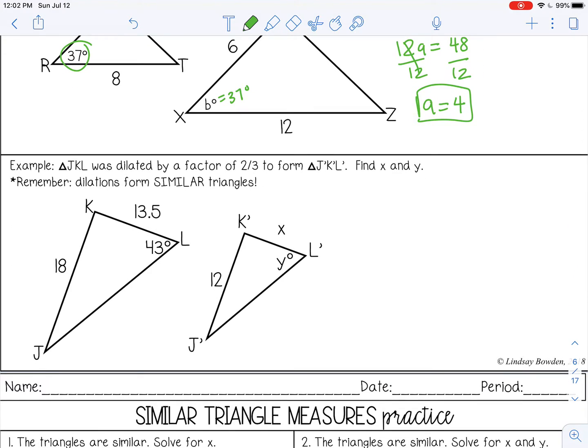Let's try one last example. Triangle JKL was dilated by a factor of 2 thirds to form triangle JKL prime. Find X and Y. There's a note, dilations form similar triangles. So even though it doesn't tell us these triangles are similar, because we know they have been dilated, we know they have created similar figures.